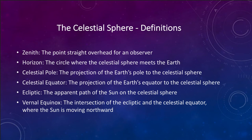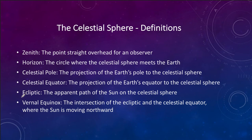The ecliptic is the apparent path of the sun. The sun does not actually move — it's the Earth that is doing the moving. But because of our reference point on the Earth, we see the sun as apparently moving, and it moves across the sky on a path called the ecliptic.